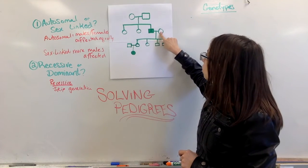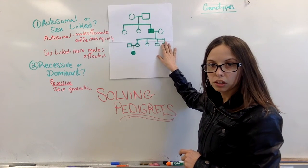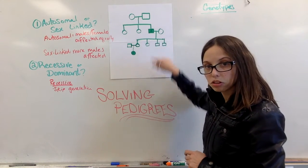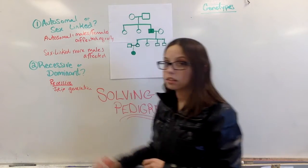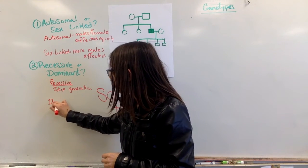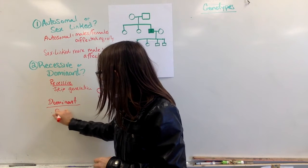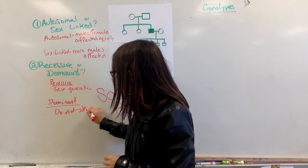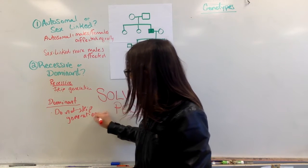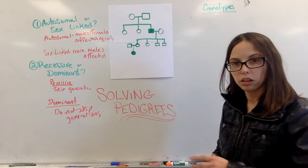This person married this individual. They had four kids, none of which were affected. One of their children gets married and has a child that is. So the skipping generations tells us that this is a recessive trait. Dominant traits, it's not possible for a dominant trait to skip generations. And I'll show you what that looks like here with another example in a moment.